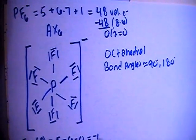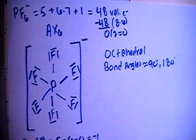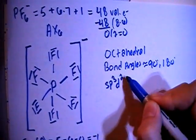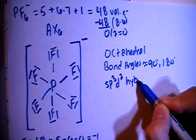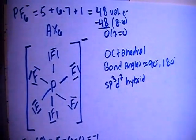In terms of hybridization, looking at the central phosphorus atom, there's 1, 2, 3, 4, 5, 6 bonding sites for 6 electron groups, so that means that we'll need 6 orbitals, so sp3d2 hybrid. 1s, 3ps, 2ds for a total of 6 hybrid orbitals for the 6 electron groups.